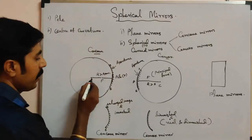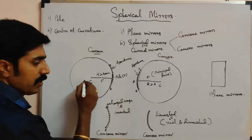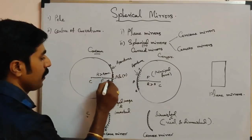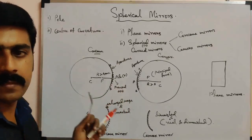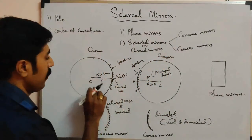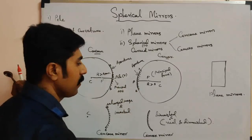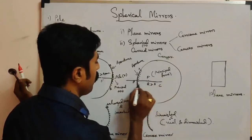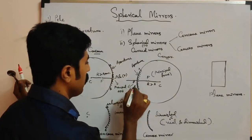Draw an imaginary line from the pole through the center of curvature. This line is called the principal axis. A line passing through the pole and the center of curvature is called the principal axis of a concave mirror as well as a convex mirror.